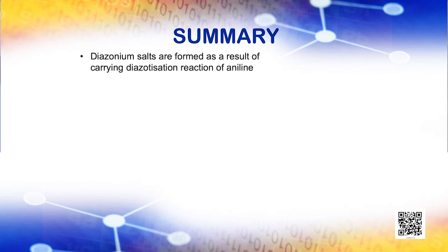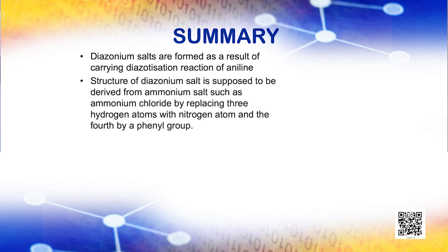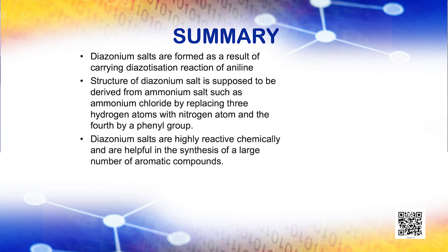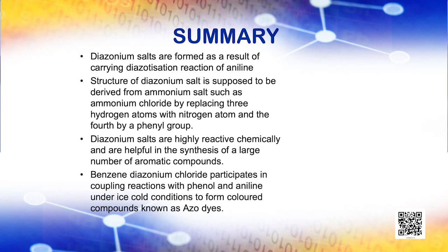To summarize this discussion, let us recall the points discussed. Diazonium salts are formed as a result of the diazotization reaction of aniline. The structure of a diazonium salt is derived from ammonium salt such as ammonium chloride by replacing three hydrogen atoms with a nitrogen atom and the fourth by a phenyl group. Diazonium salts are highly reactive chemically and are helpful in the synthesis of a large number of aromatic compounds. Benzene diazonium chloride participates in coupling reactions with phenol and aniline under ice-cold conditions to form colored compounds known as azo dyes.